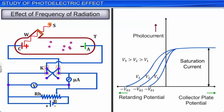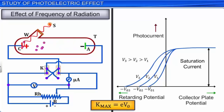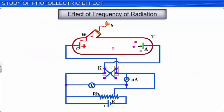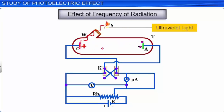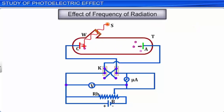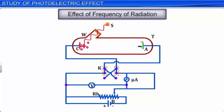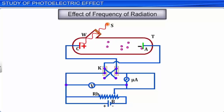But the maximum kinetic energy is independent of the intensity of radiation. It is observed that for copper, ultraviolet radiation can produce the photoelectric effect, but radiation of lower frequencies like green or red does not cause photoelectric emission. This shows that for every metal surface there exists a certain minimum frequency of radiation, called the threshold frequency or cut-off frequency ν₀, lower than which photoelectric emission is not possible, regardless of how high the intensity is.